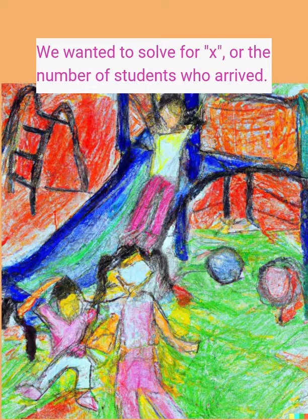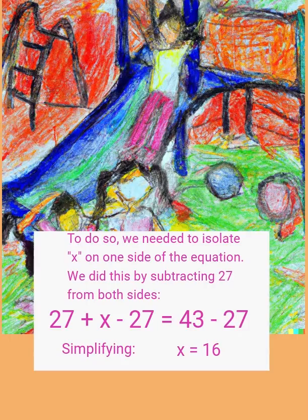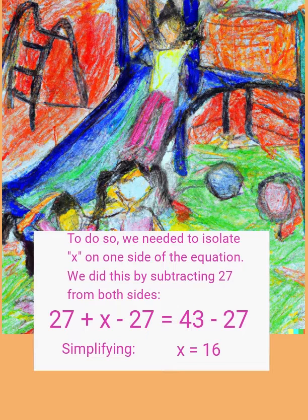We wanted to solve for X, or the number of students who arrived. To do so, we needed to isolate X on one side of the equation. We did this by subtracting 27 from both sides: 27 plus X minus 27 equals 43 minus 27, simplifying to X equals 16.